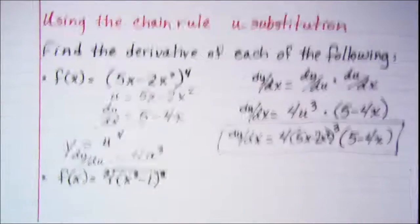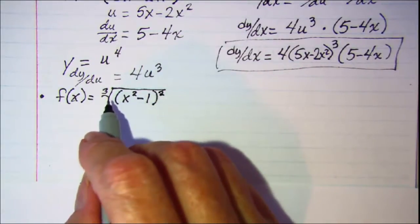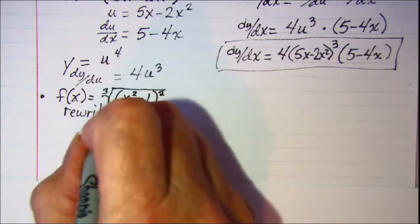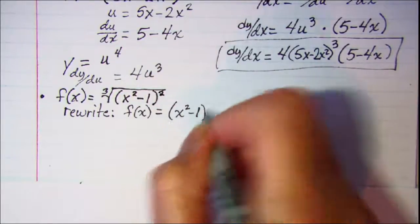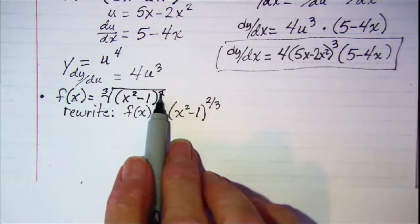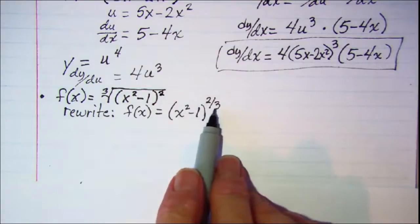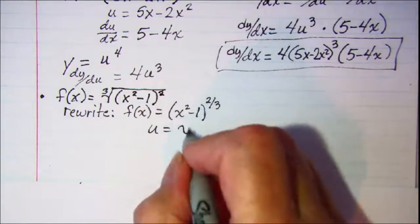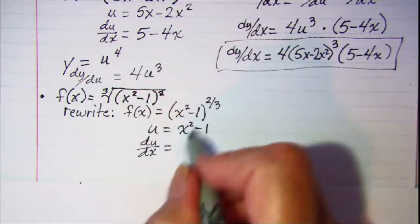Let's do another one. We need to rewrite our function so that the radical is rewritten as an expression with a fractional exponent. Our rewrite gives us f of x equals x squared minus 1, raised to the 2/3 power. Remember that the exponent of the radicand is the numerator of the fractional exponent, and the index of the radical is the denominator. Now u is this inside part, so x squared minus 1.